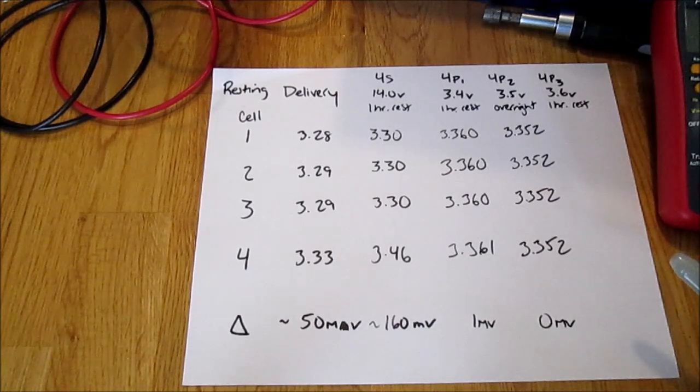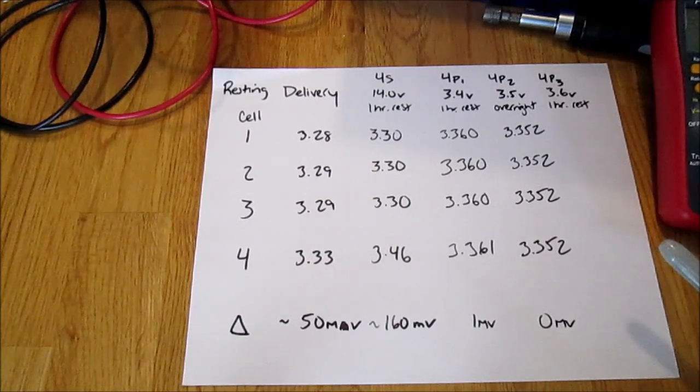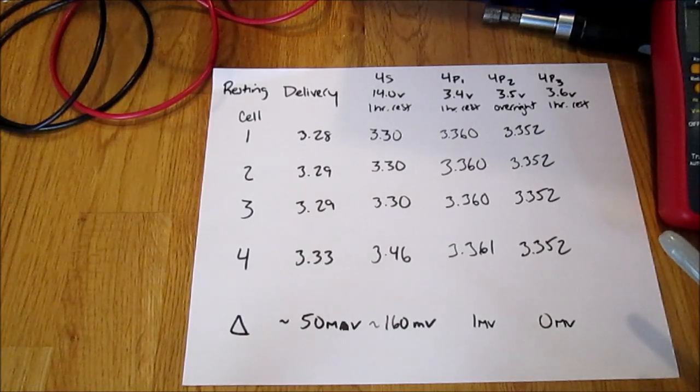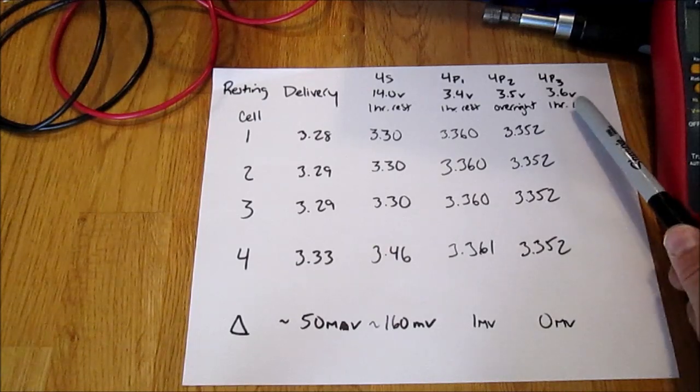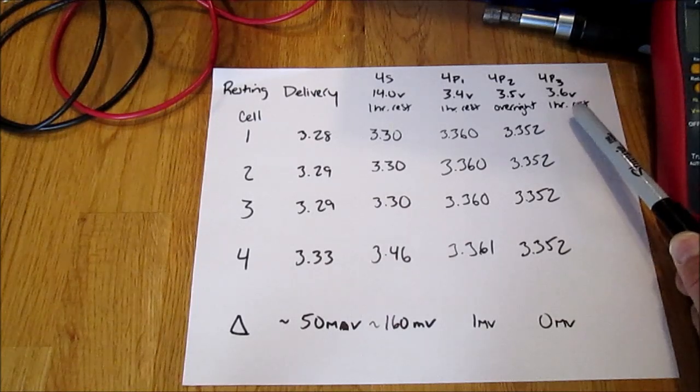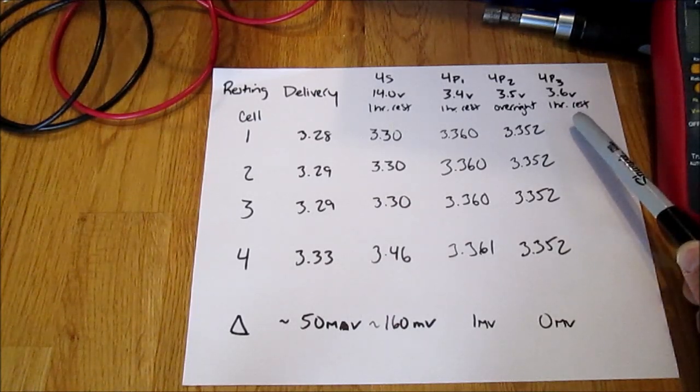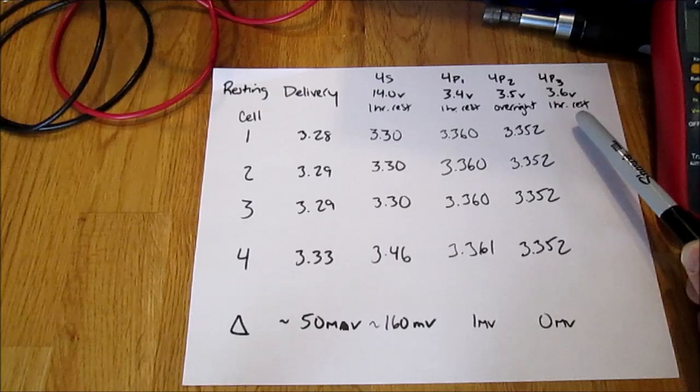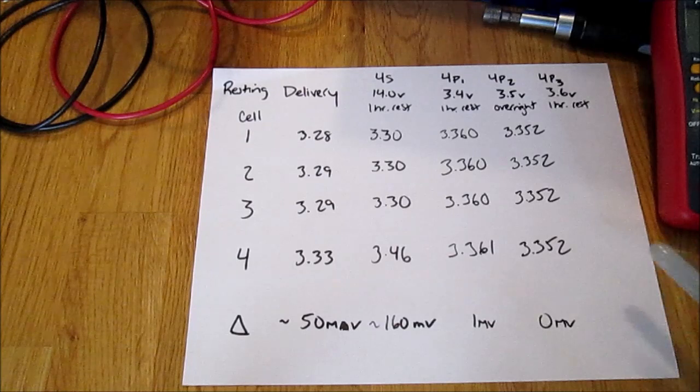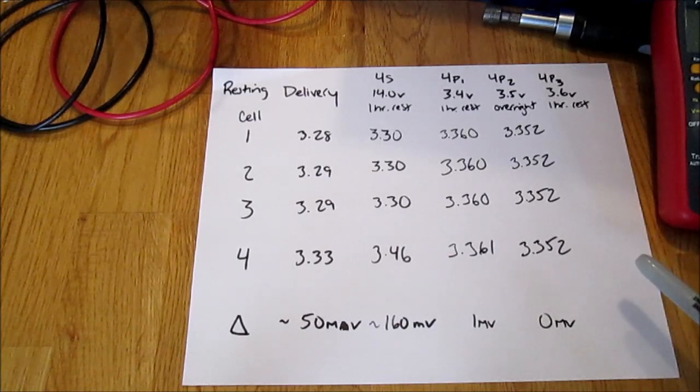To bring the pack from 3.4 volts per cell to 3.5 volts, the readings came in at 3.352 volts for all cells with zero millivolts difference. The major factor I believe was that these cells were allowed to rest overnight. I realize it's not great to leave these cells at a high state of charge for a very long time, so my plan is to very soon assemble the pack in series and use some of this stored energy.